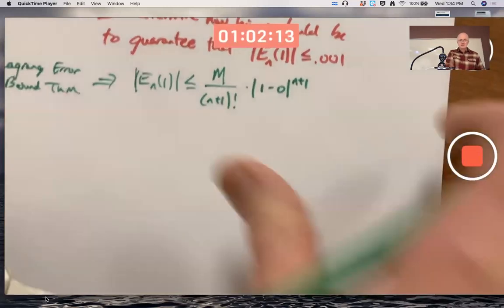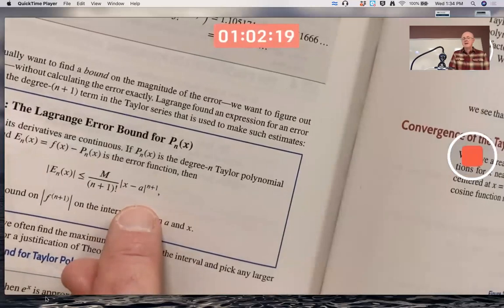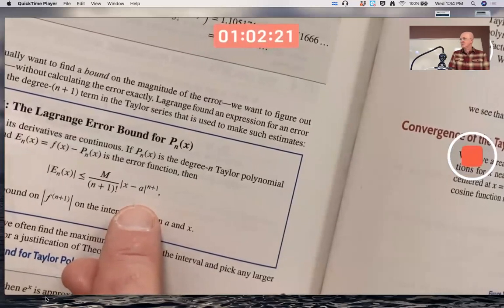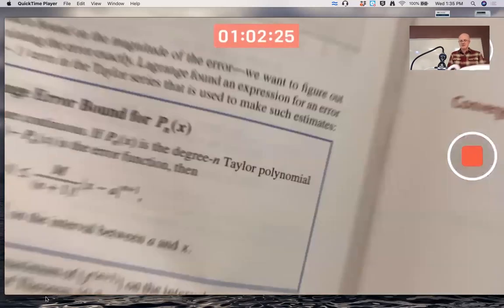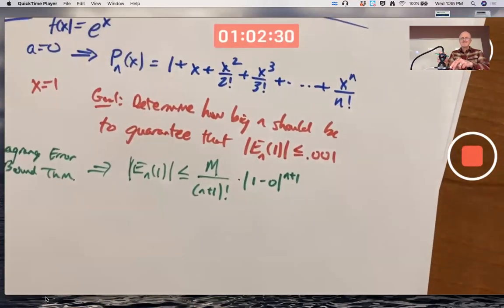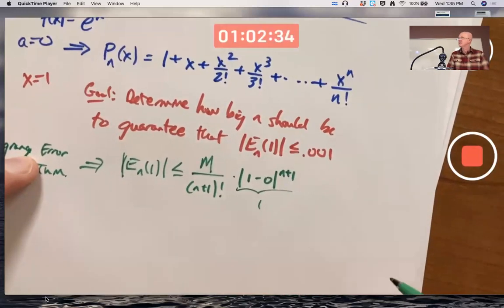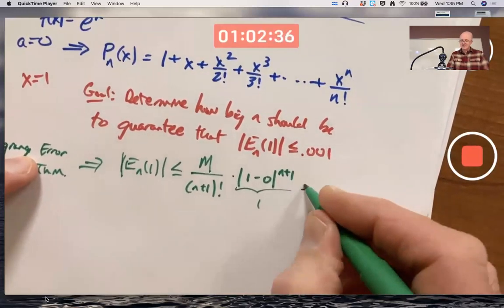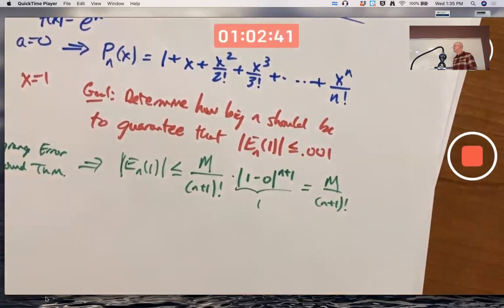This one right here, with x equal to 1 and a equal to 0. That's what I just wrote down. 1 to any power is 1. That's a 1. This simplifies to M over n plus 1 factorial. But what is M? What's M?